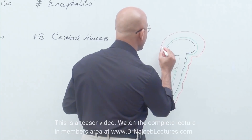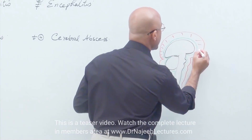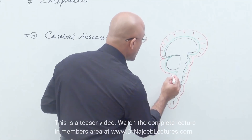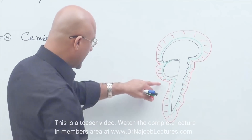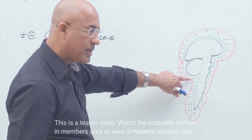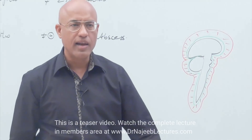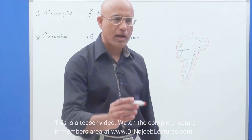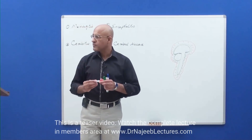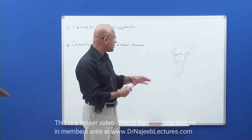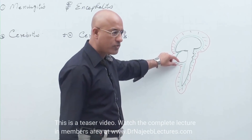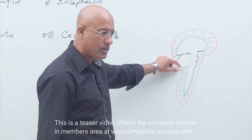The piamater is surrounded by one more layer — the arachnoid mater. Together, piamater and arachnoid mater are two delicate membranes, and together they are called leptomeninges. Why leptomeninges? Because 'lepto' means thin and delicate. These two are very thin, delicate membranes, so we call them leptomeninges.